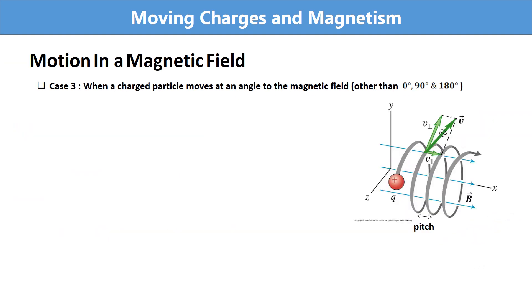This is the situation in Case 3. In the figure, you can see the motion of a charged particle in a magnetic field, showing the parallel and perpendicular components of velocity as well as the helical path of the particle.